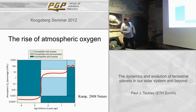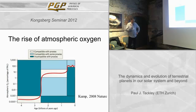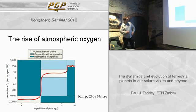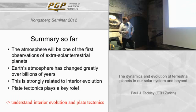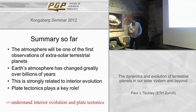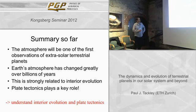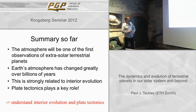Earth's atmosphere has not always been the same — it started off rich in carbon dioxide and very little oxygen, and then around 2 to 2.5 billion years ago the amount of oxygen rose, and then rose further more recently. It's important that people who study the interior think about the atmosphere and ocean, because that will be one of the first observations of extrasolar planets. We need to understand how they're linked and how they co-evolve over long time periods.